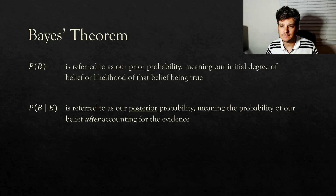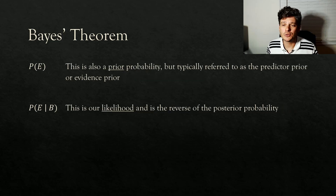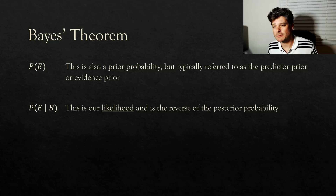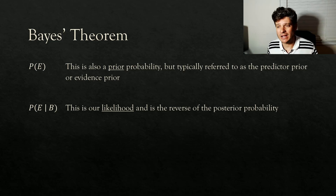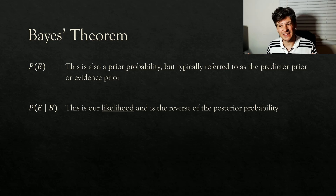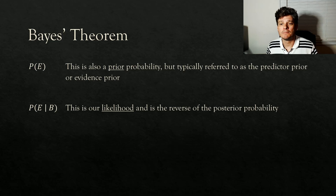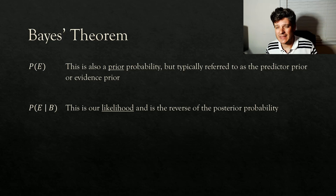It turns out machines are probably better at updating beliefs given evidence than humans. We also have the probability of our evidence, which is also a prior probability, referred to as the predictor prior or evidence prior. You'll see that in Naive Bayes' theorem we actually get rid of that, because it's going to be the same for everything. And then we have the probability of our evidence given our belief, which is our likelihood — the reverse of that posterior probability.